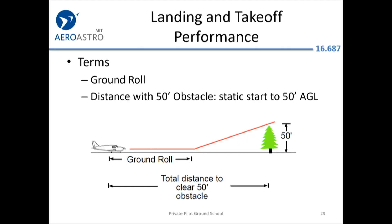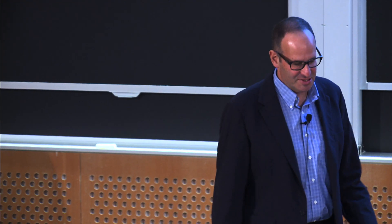Ground roll: the performance charts in the POH assume a static start — you're holding the brakes, you slam the power forward, you let off the brakes, and you get the book numbers because there's no acceleration time for the engine. That's how jets are supposed to take off too, but in practice pilots don't hold the brakes — it takes maybe 10 seconds for a heavy jet engine to spool up to full power, and sitting there with everything screaming is just uncomfortable. So technically they're doing rolling takeoffs without data to back them up.